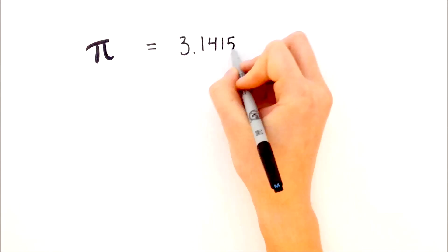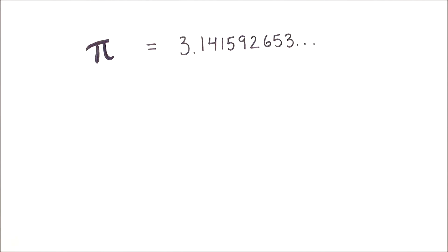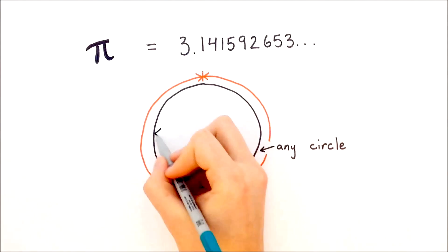The number pi is equal to 3.141592653 and so on. And it represents the ratio of any circle's circumference to its diameter.